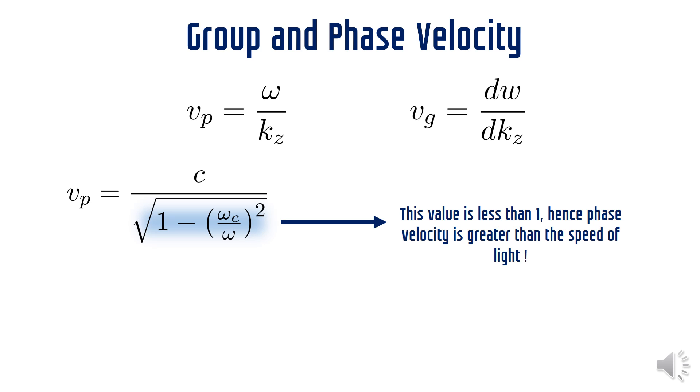Also since the denominator is less than 1 for frequencies above the cutoff frequency, the phase velocity comes out to be greater than the speed of light. Now this may seem a bit paradoxical considering that nothing can be faster than light. But we know that energy and all the other information of a wave are carried by the group velocity rather than at the phase velocity. The group velocity is calculated as del omega by del kz and the final expression is of this form, which is always less than c for frequencies above the cutoff frequency.